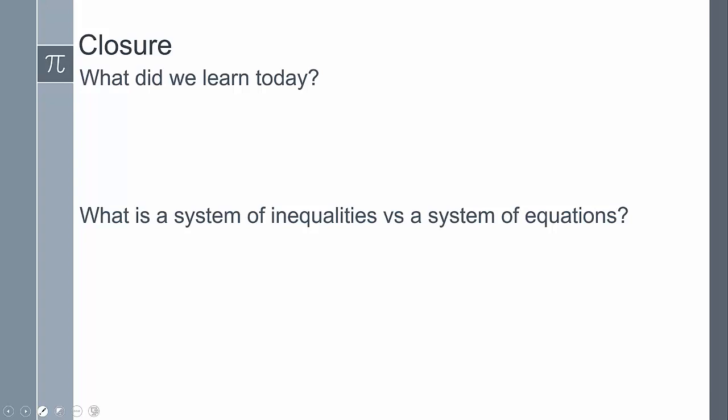To close today's lesson: we learned how to graph two-dimensional inequalities. The difference between a system of inequalities and a system of equations is that with equations we look at where the graphs intersect at a point, whereas with inequalities we look at where the regions overlap or intersect. If you have any questions, please leave them in the comments.